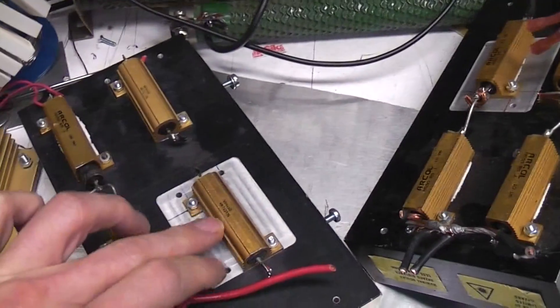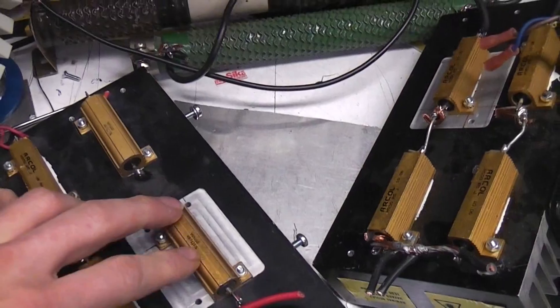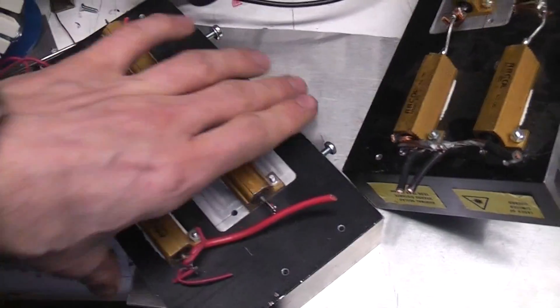One problem with these resistors: it's quite tempting to think these are like a big chunk of metal, we can stick it to a heatsink, stick a fan on it, and overload them grossly. Don't do that because what can happen is this.